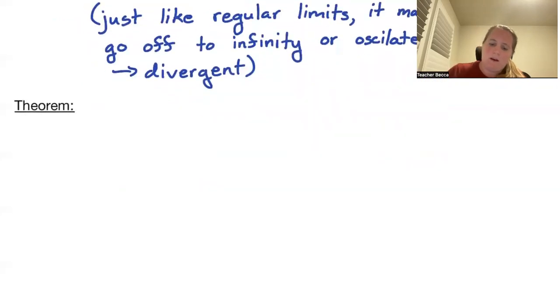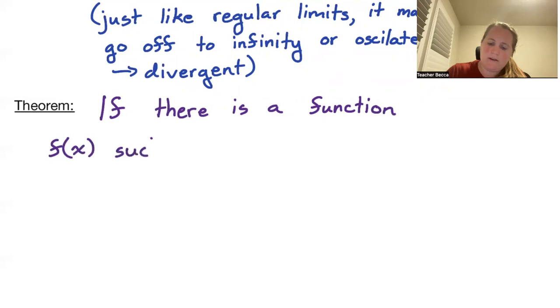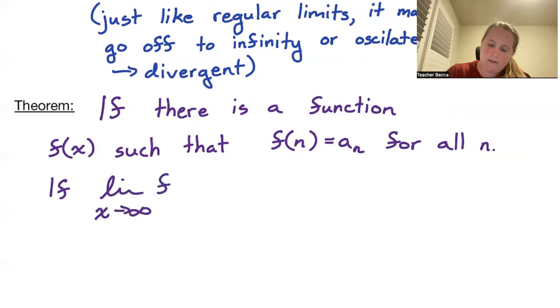So quick theorem. If there is a function f(x) such that f(n) equals a sub n for all n, then if the limit as x goes to infinity of f(x) equals L, then so does the limit as n goes to infinity of a_n equal L.